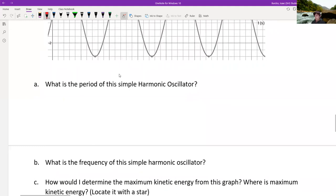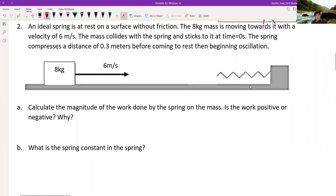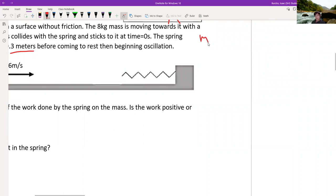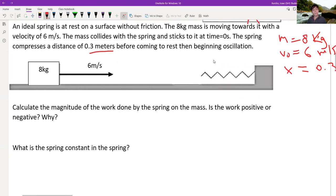We will look at number two. All right. There's a spring that's at rest without friction. Eight kg mass is moving towards it with a velocity of six meters per second. It collides with the spring and compresses a distance of 0.3 meters. So what do we know? We know that it has a mass of eight kg. It has a velocity of six meters per second initially. And then the distance it compresses is 0.3 meters.